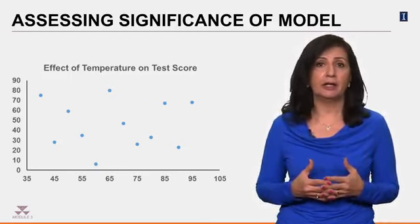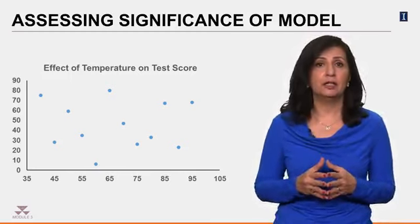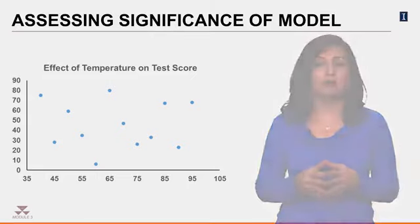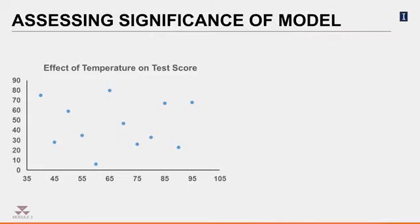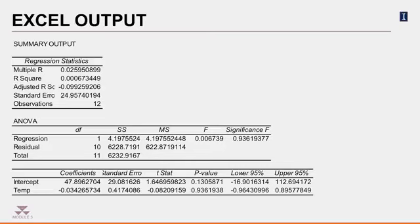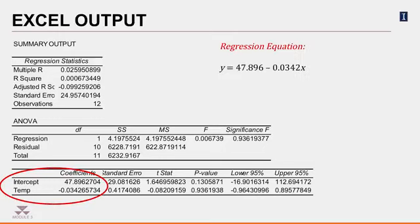This is not looking like a pattern. However, if she used Excel to run the regression, she will get the following. Focusing on the part of the table that gives the slope and the intercept, then the regression equation is 47.896 minus 0.0342 times X, where X is the temperature outside. The weather forecast says tomorrow the high will be 53 degrees, so the student can expect the test score of 46.